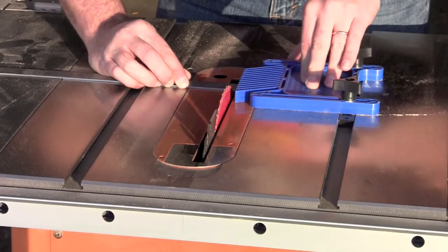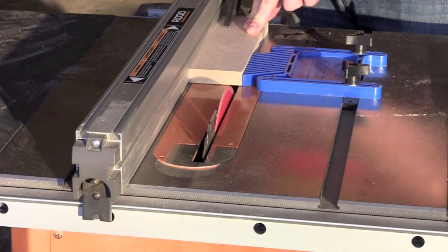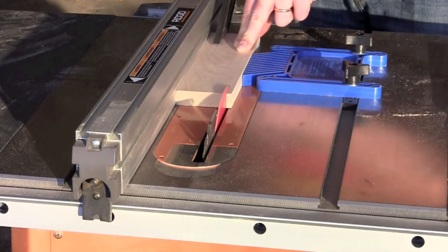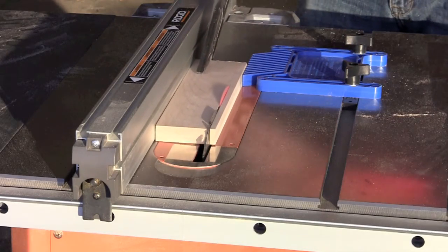I set my feather board up a quarter of an inch away from the blade so I could cut the four maple accent pieces with a half inch width.